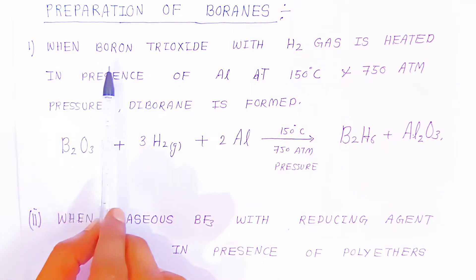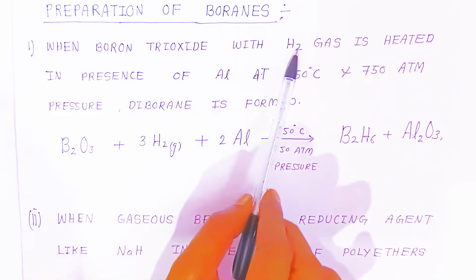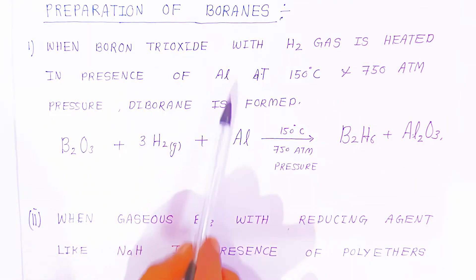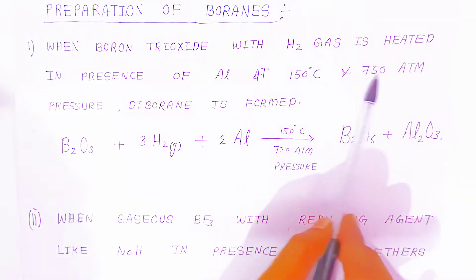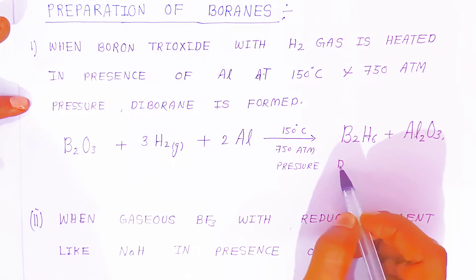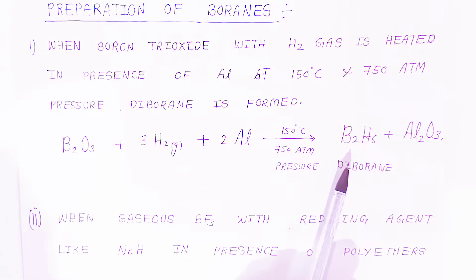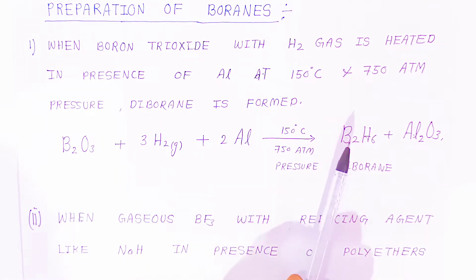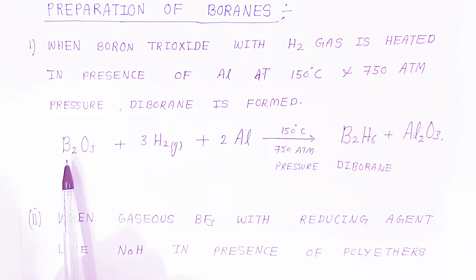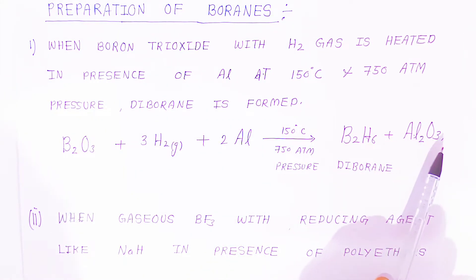The first preparation method uses boron trioxide as the raw material. When boron trioxide reacts with hydrogen gas, heated in the presence of aluminium at 150 degree Celsius and 750 atmospheric pressure, you get the compound called diborane. So the raw material is boron trioxide reacting with hydrogen gas in the presence of aluminium at 150°C and 750 atm to form diborane and aluminium trioxide.